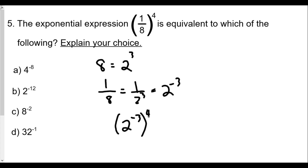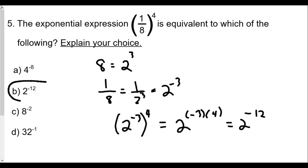Using the power rule, we keep the base the same and multiply the two exponents: two raised to negative three times four gives us two to the negative 12. That corresponds to choice b. I like to convert numbers into the smallest base possible and then make adjustments from there.